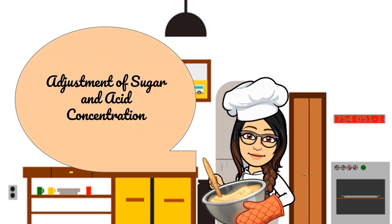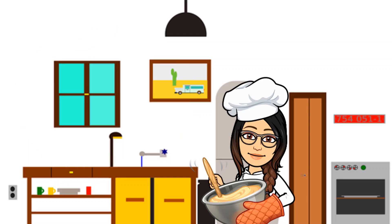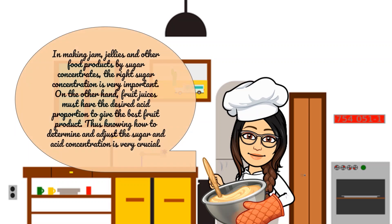Adjustment of Sugar and Acid Concentration. In making jam, jellies, and other food products by sugar concentrates, the right sugar concentration is very important. On the other hand, food juices must have the desired acid proportion to give the best food product. Thus, knowing how to determine and adjust the sugar and acid concentration is very important.